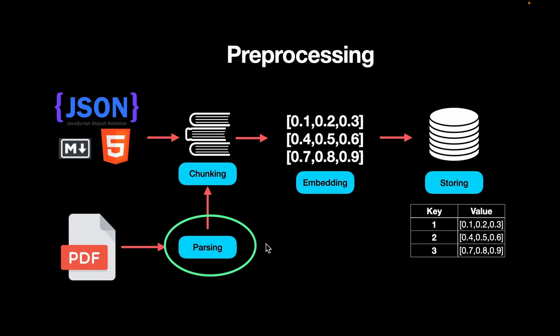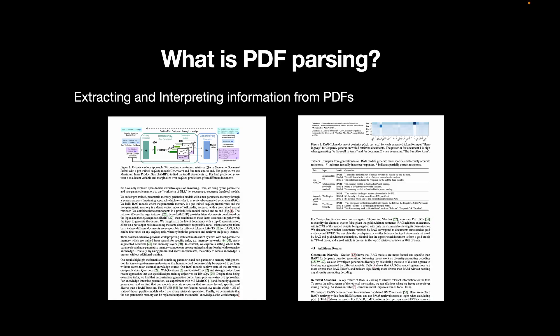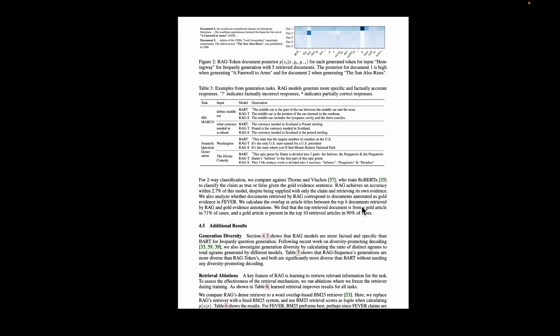So what is PDF parsing? PDF parsing is extracting and interpreting information from PDF files. It involves analyzing the structure and content of a PDF file to extract meaningful information such as tables, figures, or even just plain text. For example, if you want to search for some information, it's just extracting plain text based on your search query.